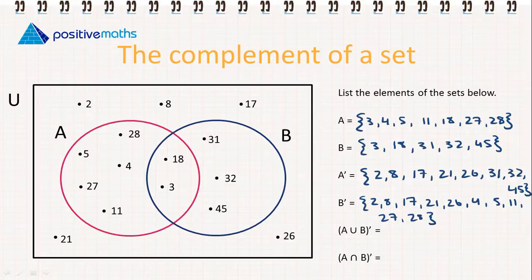Now we're listing the elements of A union B complement. So we have 2, 8, 17, 21, and 26.